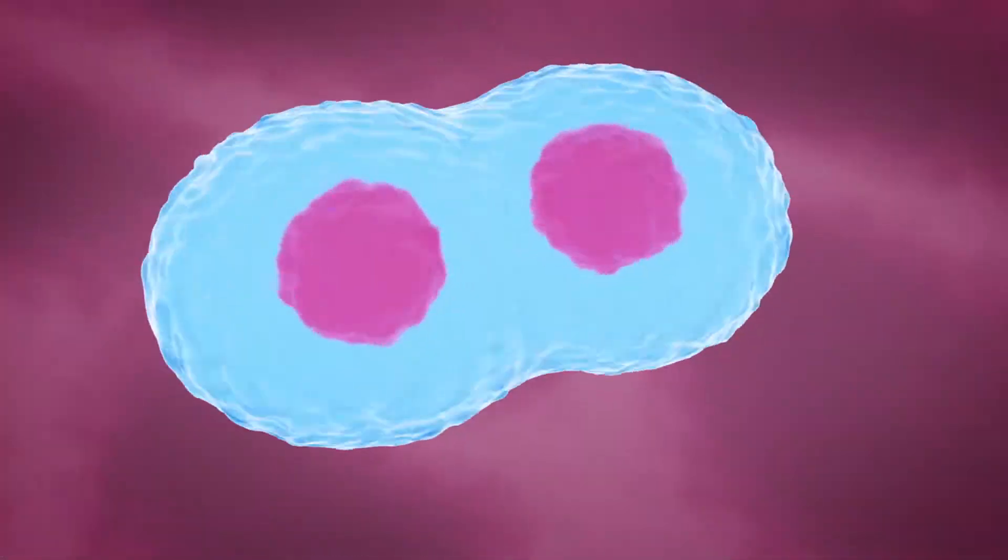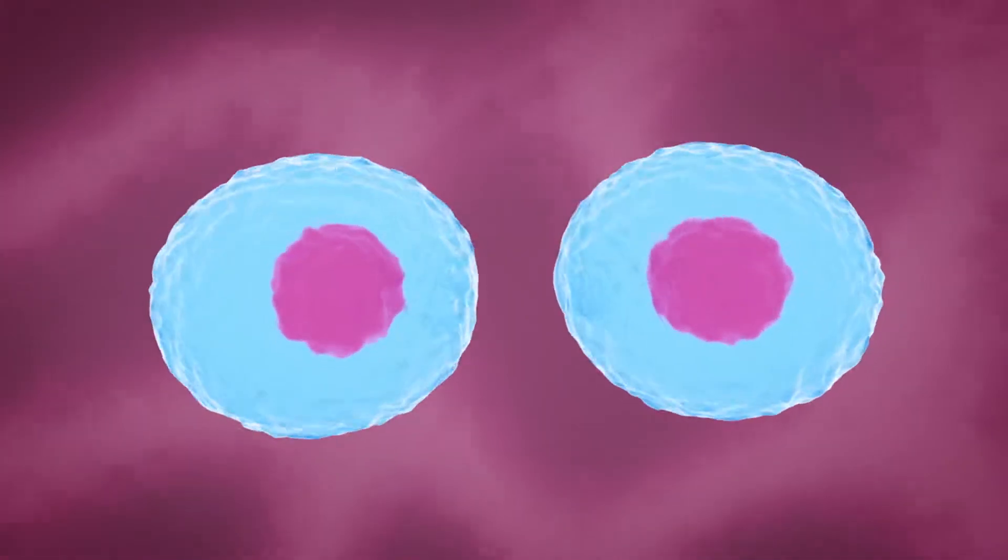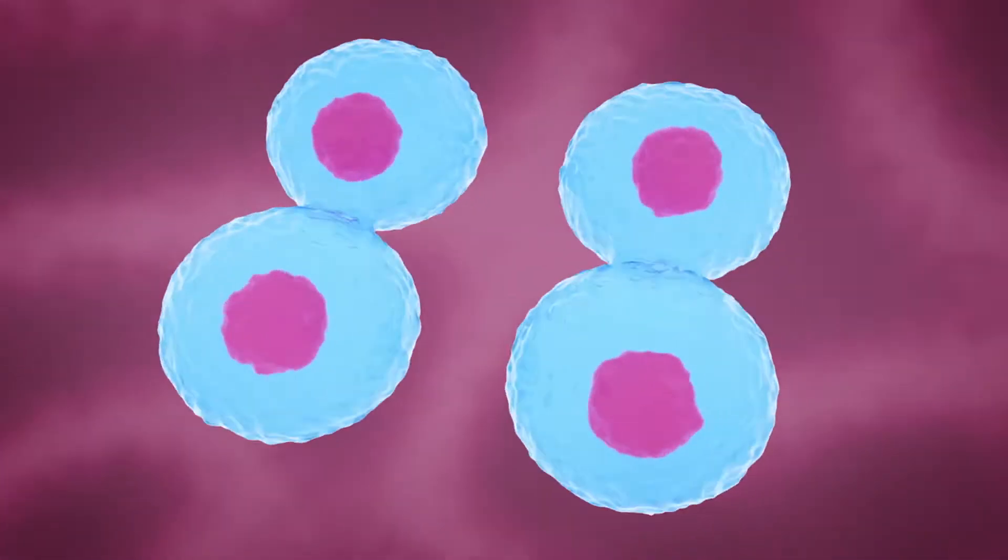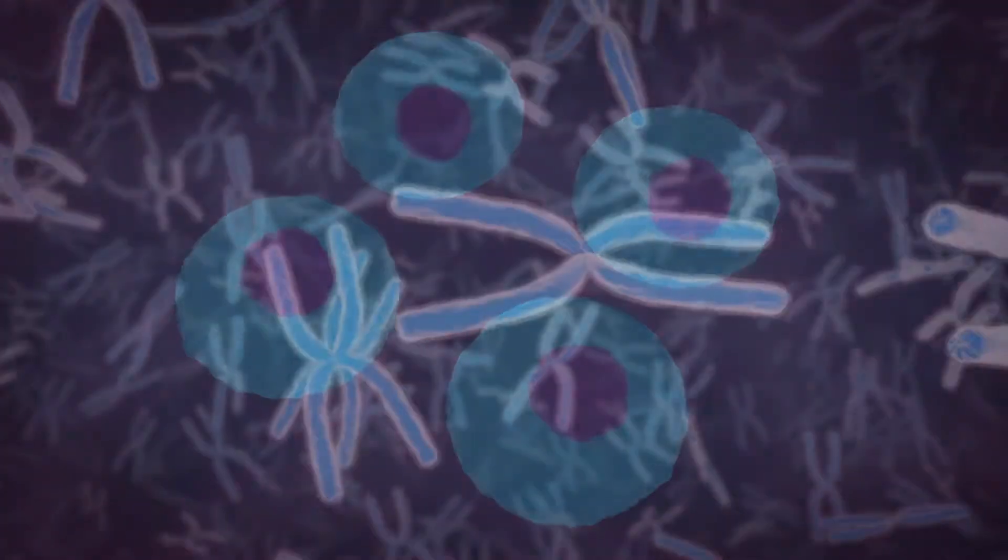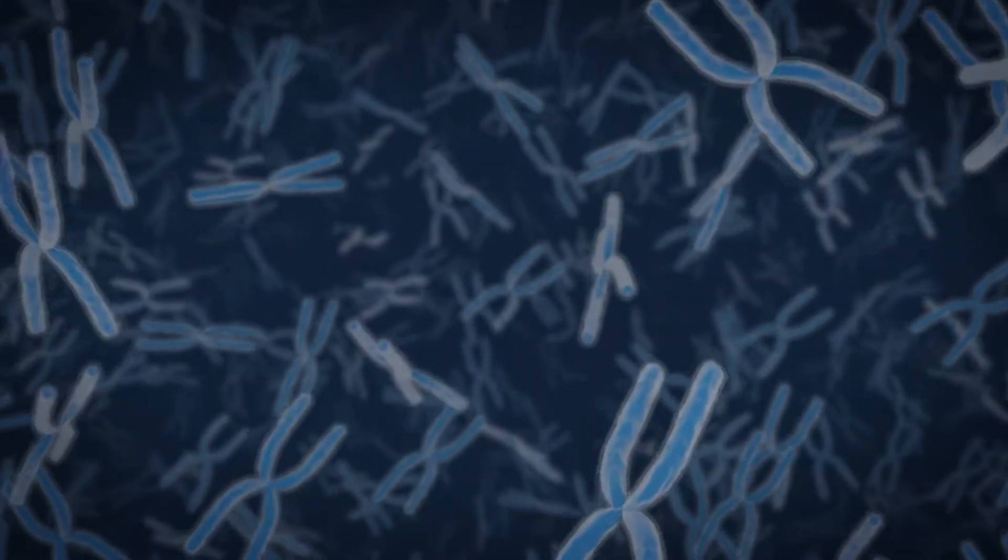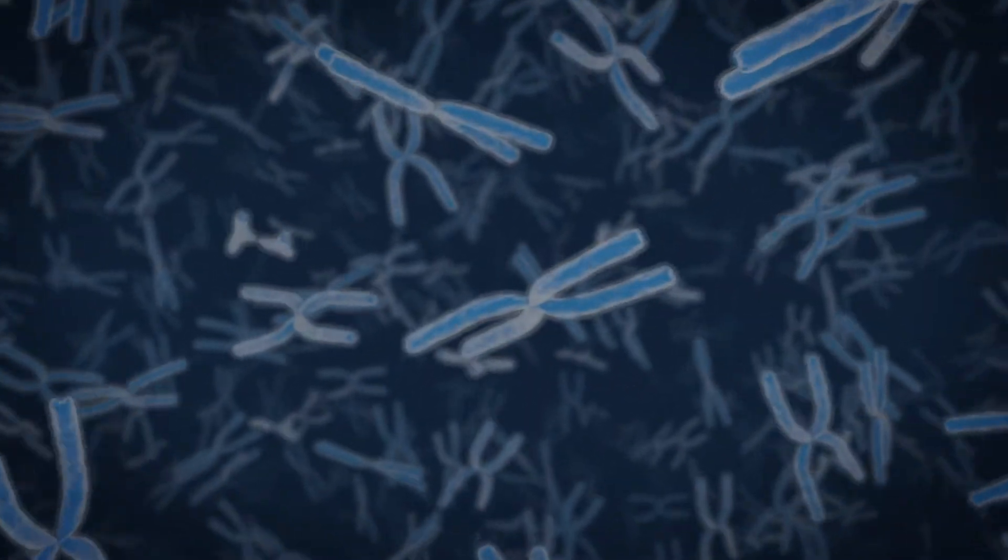The first one is cell division, where we will create a cell that will divide twice. And then we're going to model and create some chromosomes and use some of Maya's motion graphics tool sets to create a crowd of them.